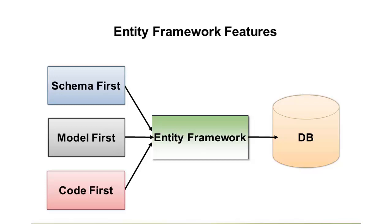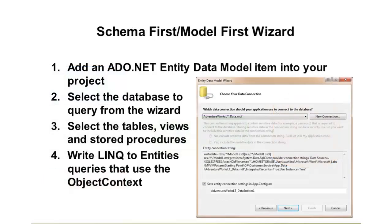Schema first and model first certainly warrant attention though. It's very possible you're at a company where a DBA creates the database. With schema first, we can use a wizard to take our existing database and reverse engineer it into classes that map table to class and property to field. The steps are: add an ADO.NET entity data model to your project, select the database, then select your tables on the next screen — and then you can write LINQ queries against the generated entities. It makes it very easy to work with.